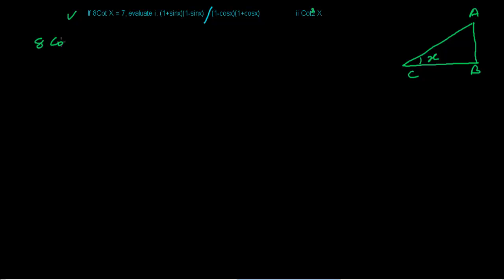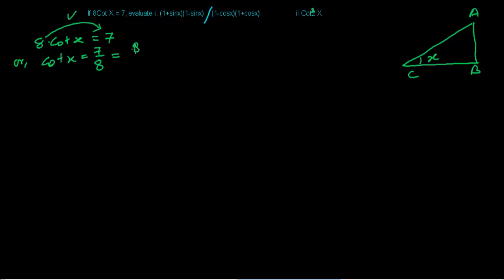Now let's work with the given condition: 8·cot(x) = 7. From here, dividing both sides by 8, we get cot(x) = 7/8. We know that cot is the ratio of base to perpendicular, so base corresponds to 7 and perpendicular corresponds to 8.